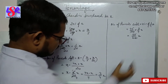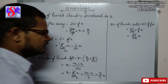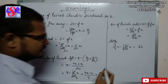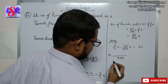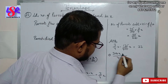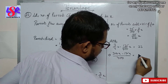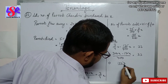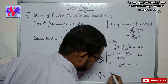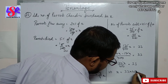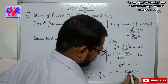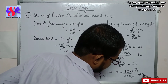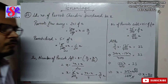After selling this many parrots, 33 parrots are still left. So according to the question, 3 upon 4 x minus 135 upon 400 x equals 33. Taking LCM as 400, we get 300x minus 135x equals 33 into 400. So 165x upon 400 equals 33, therefore x equals 33 into 400 upon 165, which gives x equals 80. So the number of parrots which Chandni purchased is 80.